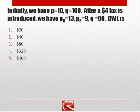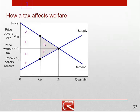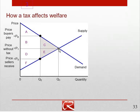So how can we calculate the deadweight loss? We're trying to calculate the size of this triangle. It has a base equal to the price paid by buyers minus the price received by sellers, and a height equal to the fall in the number of transactions. We then apply the formula for the area of a triangle: one-half base times height.